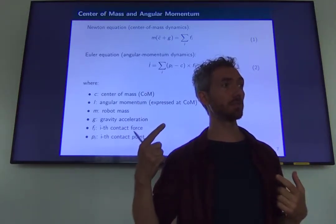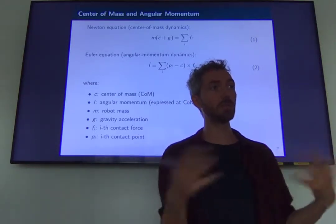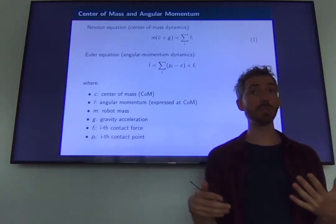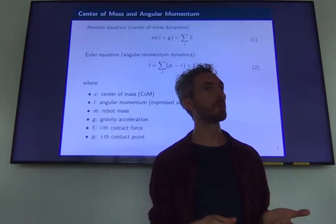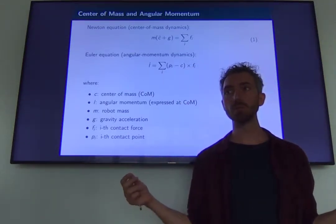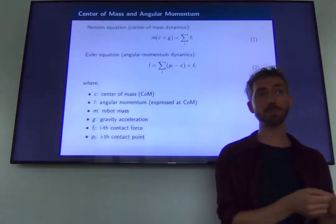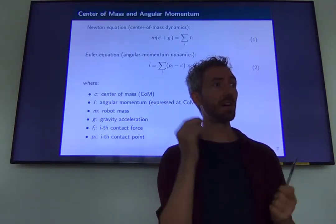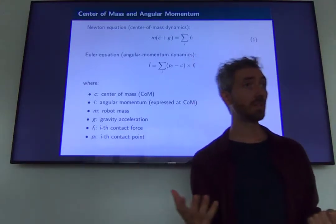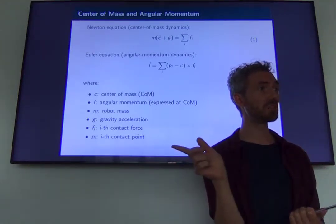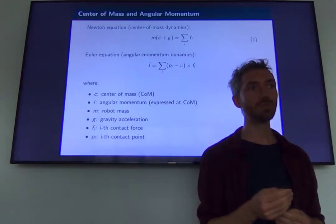With a predefined contact sequence, the trajectory optimization problem becomes standard. However, it's still high-dimensional because a legged robot has a large number of degrees of freedom — 18 for a quadruped, more than 30 for a humanoid. To make it fast we rely on a simplified low-dimensional model. For locomotion we are very lucky because we have a simple model that captures the dominant dynamics well. This is not the case for manipulation, which is why manipulation trajectory optimization is harder.